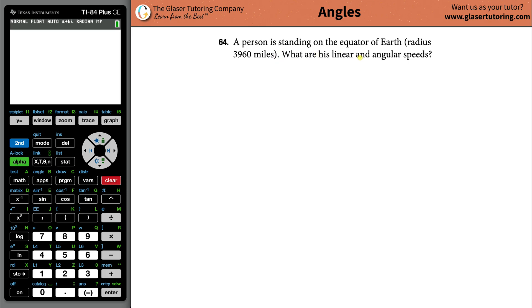Number 64. A person is standing on the equator of Earth with a radius of 3960 miles. What are his linear and angular speeds? So let's draw the Earth, circular, well kind of, it's a sphere. Let's give it a little bit of perspective here. There you go, modern day Bob Ross. God, I love that guy.